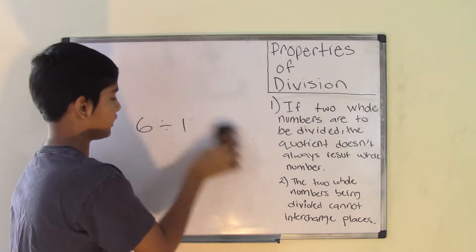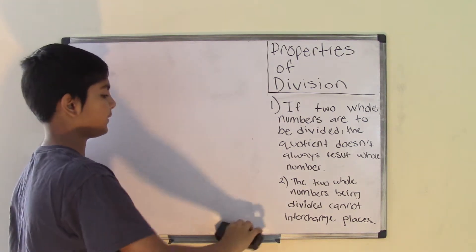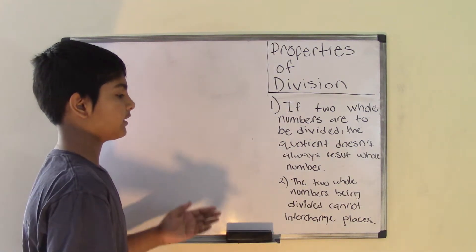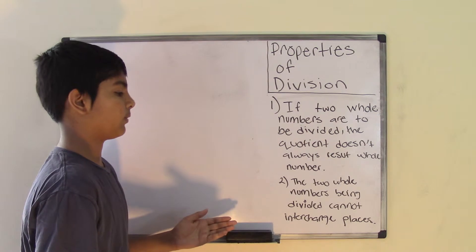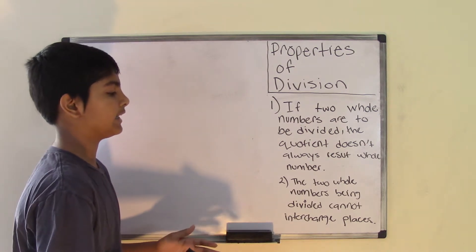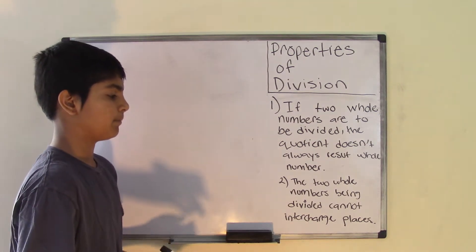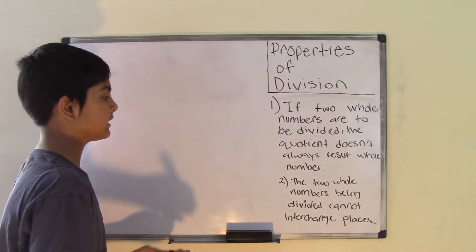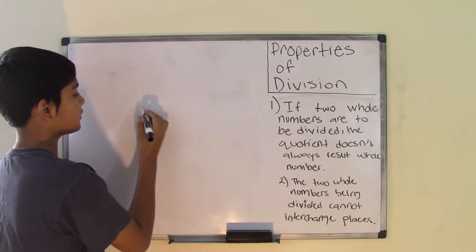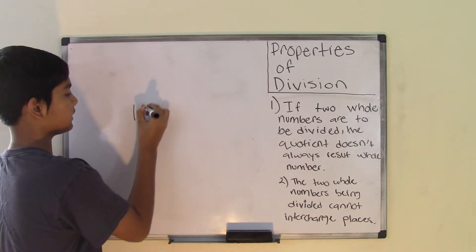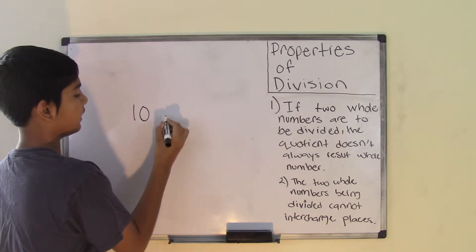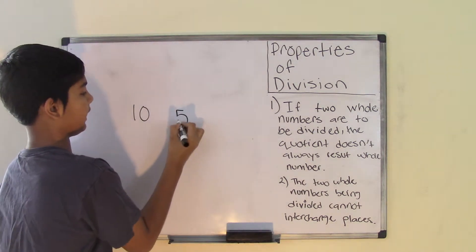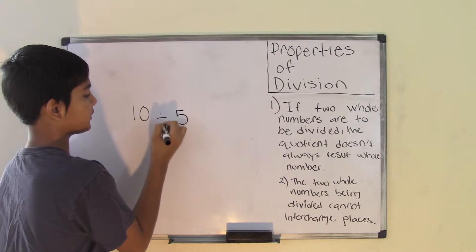Now let's move on to our second property, which states that the two whole numbers being divided cannot interchange places. So let's say we have the two whole numbers 10 and 5, and we are to divide them.